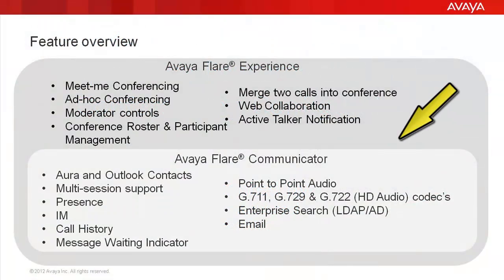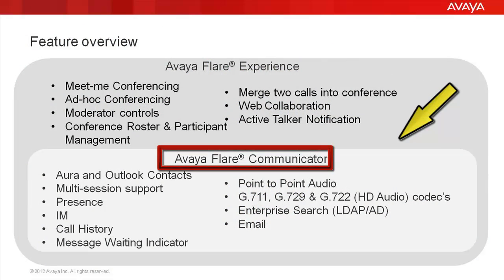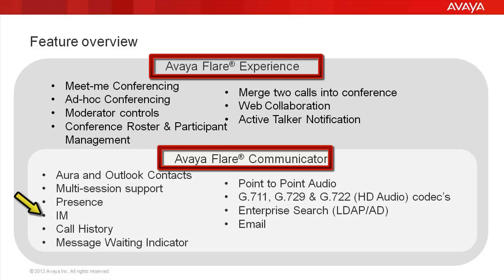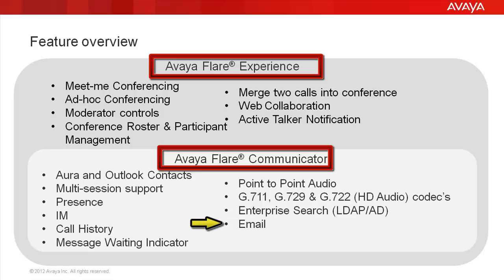The lower portion of this slide shows the core features that are available with both the Avaya Flare Communicator and Avaya Flare Experience client. They are Aura and Outlook Contacts, Multi-Session Support, Presence, IM, Call History, and the New Message Waiting Indicator. Also supported are Point-to-Point Audio, the G711, 729, and 722 Hi-Def Audio Codecs, Enterprise Search, and Email Generation.